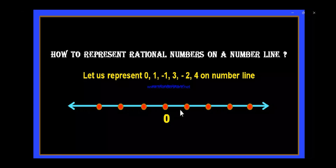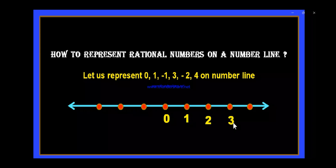Let us take the middle point as 0. On the right hand side of 0, we represent points with positive values: plus 1, plus 2, plus 3, plus 4. So the point after 0 is 1, next is 2, next is 3, and the next point represents plus 4.